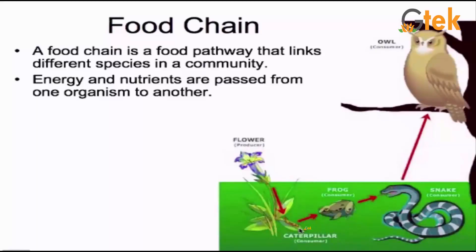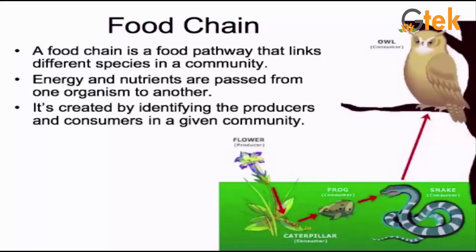The energy is transferred from producer to primary consumer and secondary consumer. Here is a representation for the food chain, created by identifying the producer and consumer in a given community.